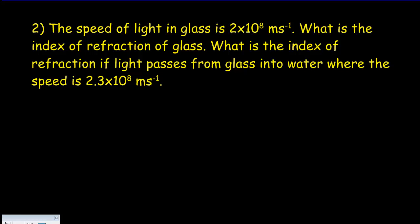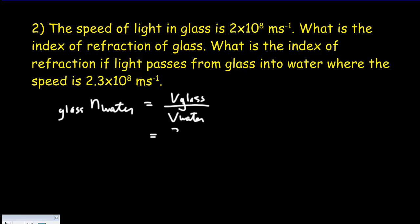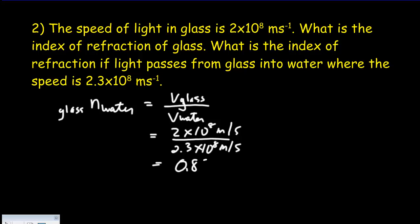In the second problem, we're looking for the index of refraction as light passes from glass into water, where the speed in glass is 2.0×10⁸ m/s and in water is 2.3×10⁸ m/s. This is a relative index of refraction. Dividing 2.0 by 2.3 gives a relative index of 0.87. Notice that a relative index of refraction does not have to be greater than 1 — it will always be less than 1 when going from slow to fast.